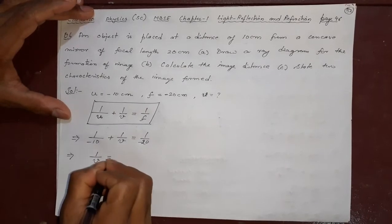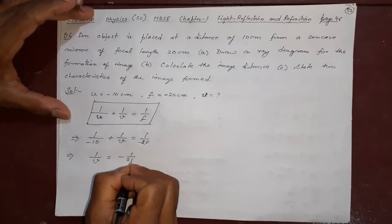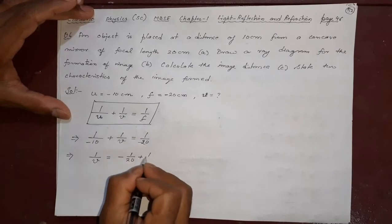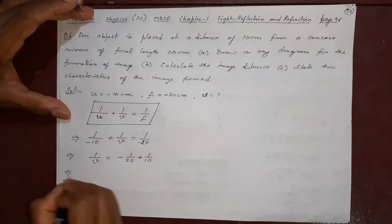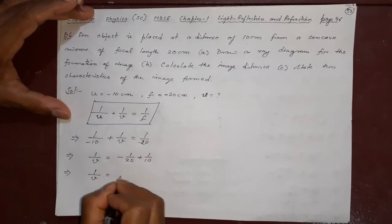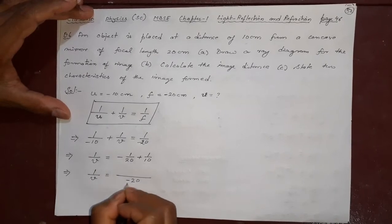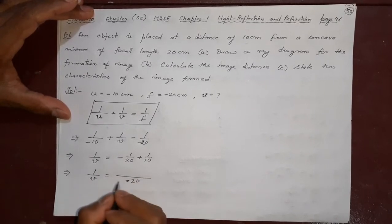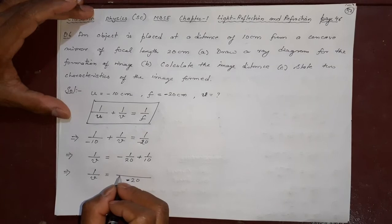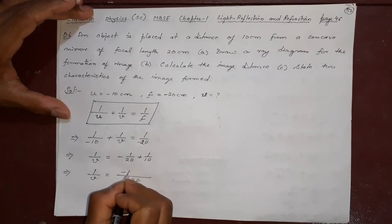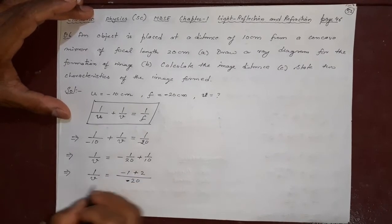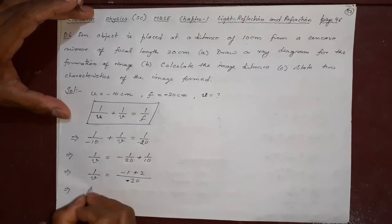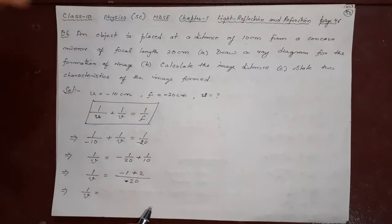So, 1 by v equal to minus 1 by 20. This will go this side and become plus 1 by 10. This is 1 by v equal to, this is 20 will be the LCM. 2s are 20. So, 1, 1s are 1 minus 1. 10, 2s are 20. So 1, 2s are 2. 1 minus 2 will be what is that? It will become,